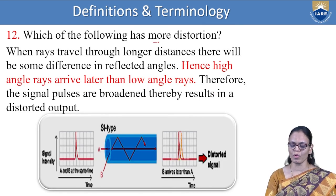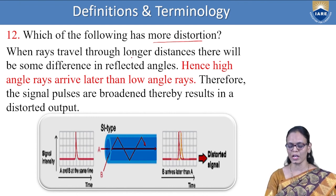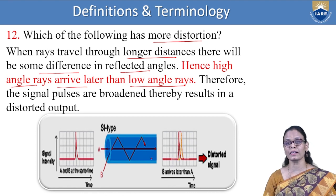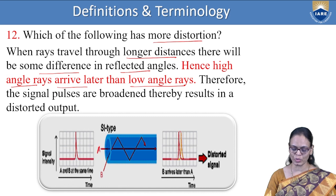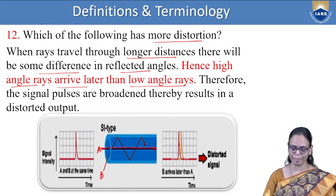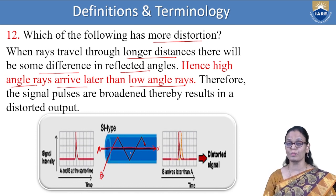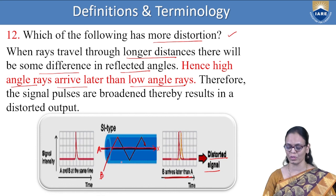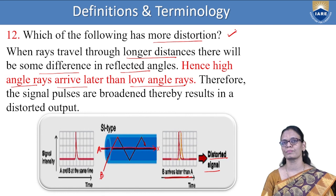Which has more distortion — graded index or step index? When rays travel longer distances, there is a difference in the path length. High-angle rays arrive later than low-angle rays — rays traveling at a higher angle arrive later than those at a low angle. If we consider two rays A and B, ray B travels straight and covers a lesser distance compared to ray A, so ray A arrives faster at the output. This gives rise to a distorted signal because B arrives later than A — if all signals do not arrive at the same time, it gives rise to distortion.